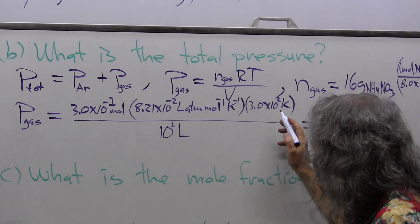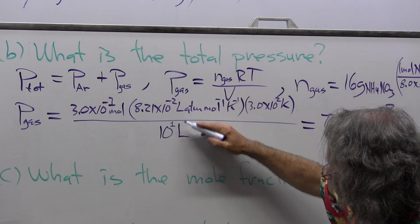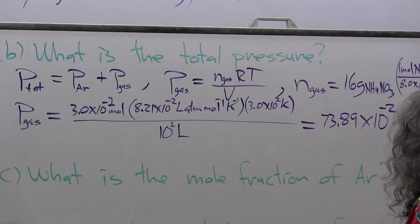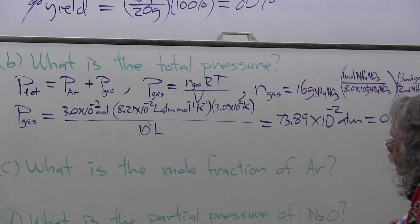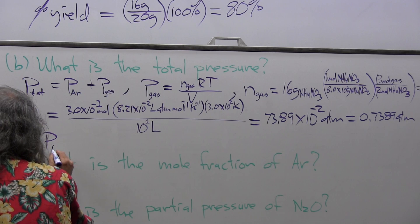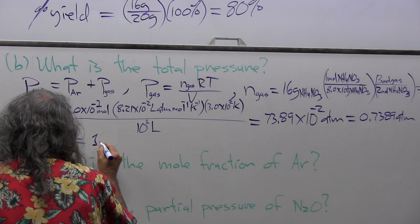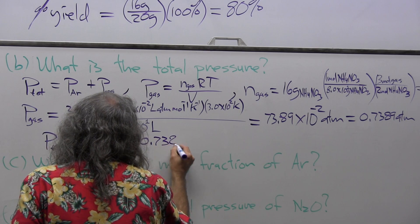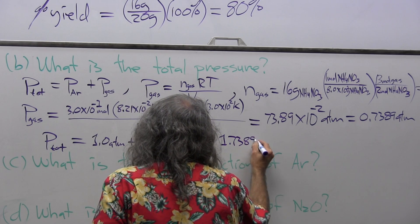And the units all drop out. Kelvin cancels, moles cancel, I've got liters canceling, so I'm left with this many atmospheres. And that's equal to 0.7389 atmospheres. So now we have the pressure of the gas.